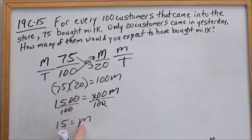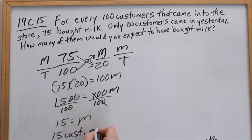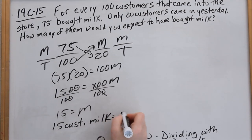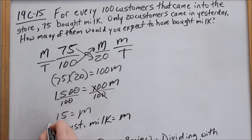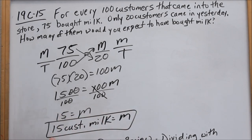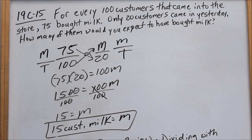So what does that represent? That represents 15 customers bought milk. It doesn't really matter how you write the answer, just so that you know that 15 customers bought milk and you know what 15 represents.